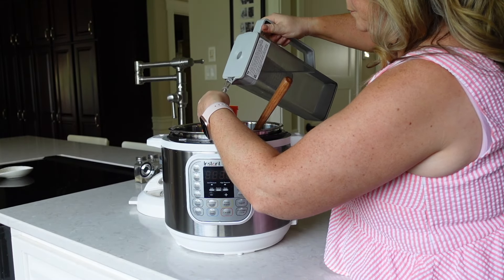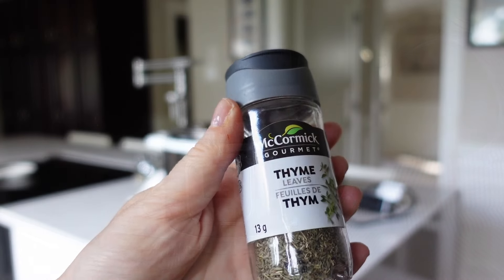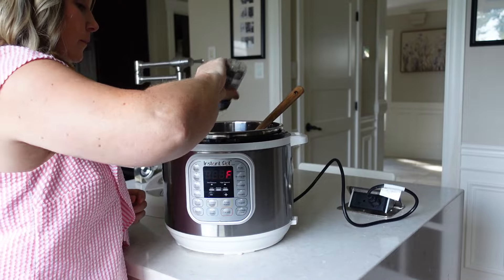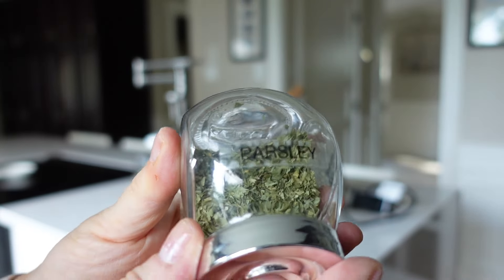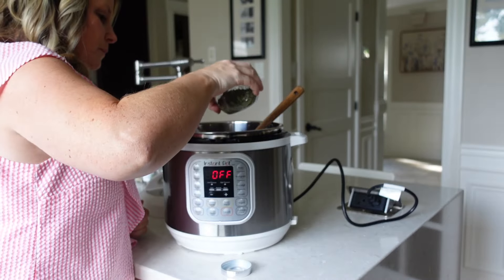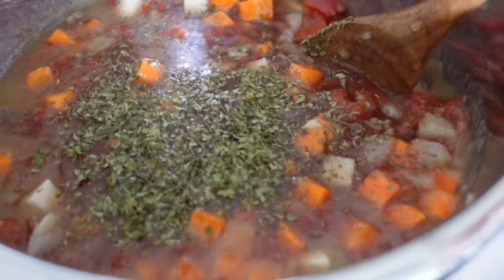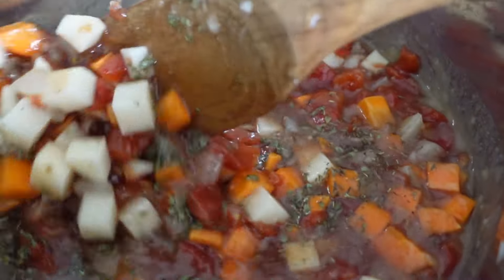And now I'm just adding in one cup of water and then adding the thyme and the parsley. I don't know exactly how much I added of each, but I think it was about two teaspoons of each, I would say.